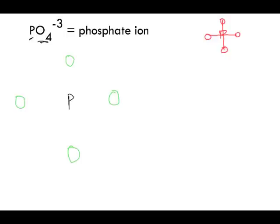Now we're going to draw our valence electrons for phosphorus. Phosphorus is in group 15 on the periodic table, so it has five valence electrons: one, two, three, four. When drawing Lewis dot diagrams, we draw one on each side until we get to the fifth one, and then we pair the electrons together.